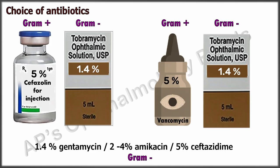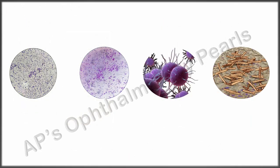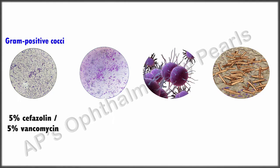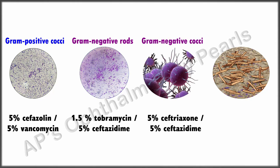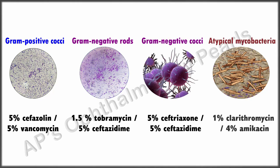If the type of organism is known, then specific antibiotics may be used: cefazolin or vancomycin for gram-positive cocci, tobramycin or ceftazidime for gram-negative rods, ceftriaxone or ceftazidime for gram-negative cocci, and clarithromycin or amikacin for atypical mycobacteria.